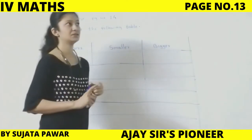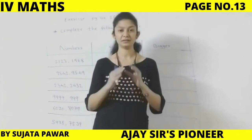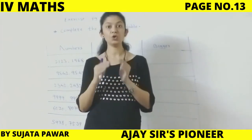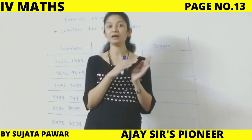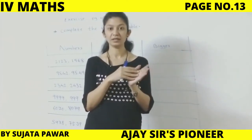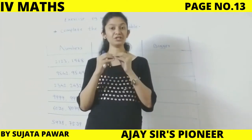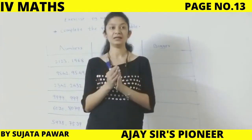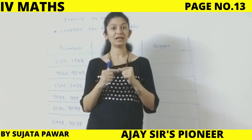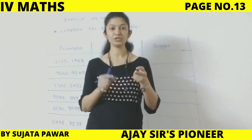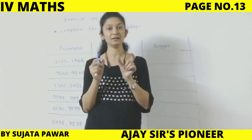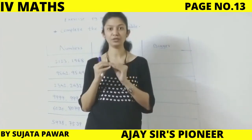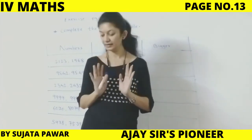Now see children — we all know that the before number is always smaller than the after number. Jo pehle number aata hai, woh hamesha small hota hai — chhota hota hai — after number se. Like 12 after 13: 12 is smaller than 13. Jo pehle number aata hai, hamara 12, woh 13 se small hota hai.